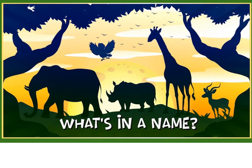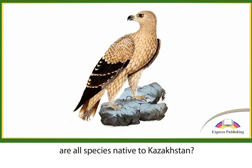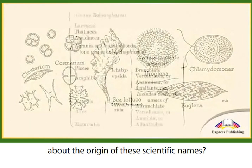What's in a name? Did you know that Huso-Huso, Panthera uncia, and Aquila nipalensis are all species native to Kazakhstan? Perhaps you know these animals better by their common names: the beluga sturgeon, the snow leopard, and the steppe eagle.